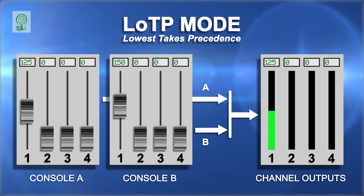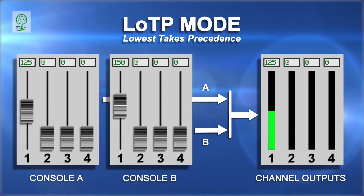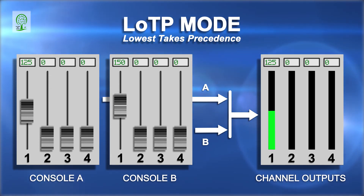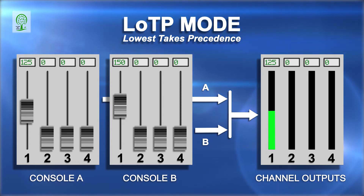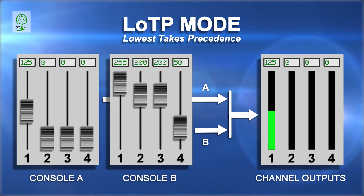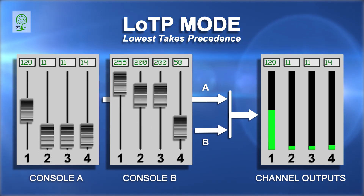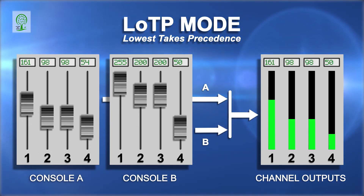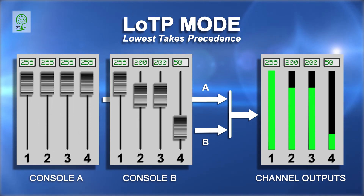One use of the LOTP mode would be to have a controller that sets a level cap per channel, so that only a preset level can be reached. For example, if all four channels of input B are set as shown, then input A's respective channels can't exceed these values. As the channels on input A increase as shown, the output of those channels will not exceed the preset values of input B.